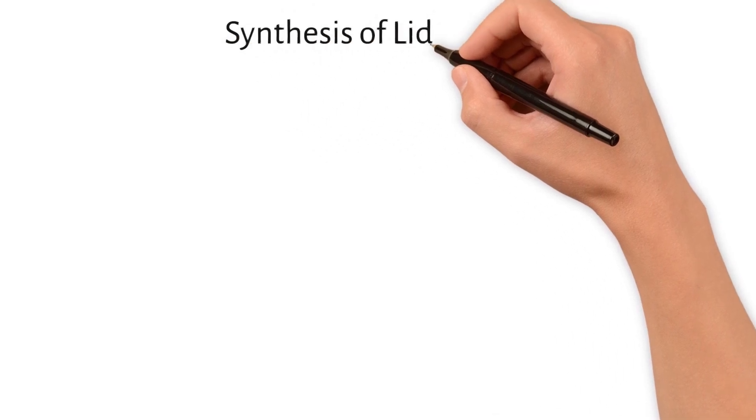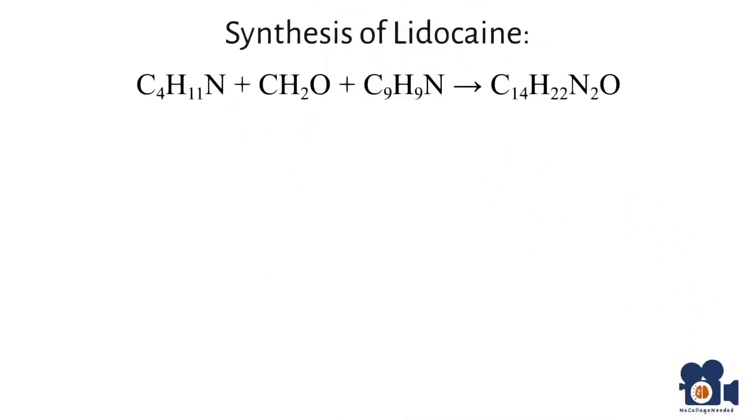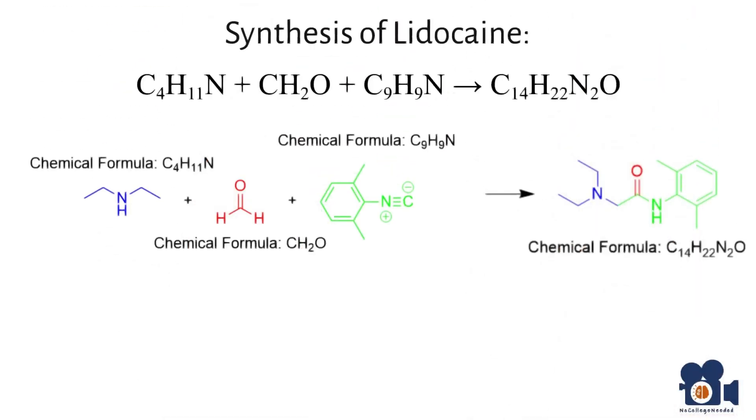Looking at the synthesis again, you see that it is a 1 to 1 to 1 reactance, going to one product. Since there are no coefficients in the formula, C4H11N plus CH2O plus C9H9N going to C14H22N2O, this means that you'll need 21.336 moles of each starting material.